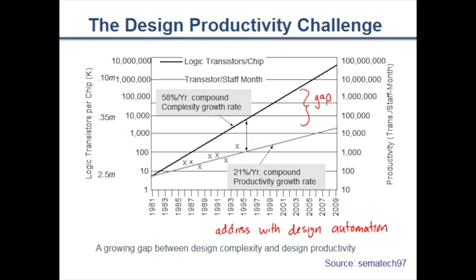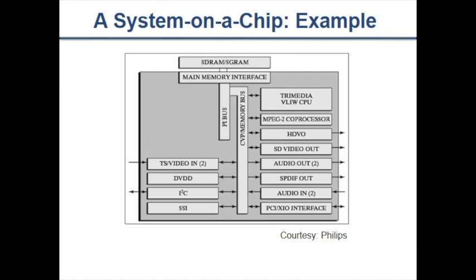Computers are very good at doing things in regular patterns — we write some code and they can execute it much faster than humans. We really want to leverage this to increase our productivity as digital designers. Consider a system-on-chip from Philips with a CPU, video coprocessor, audio hardware, and many complex functional blocks. We need to leverage what computers do well — building regular structures and following code instructions — to bring all these blocks together rather than designing each one manually.